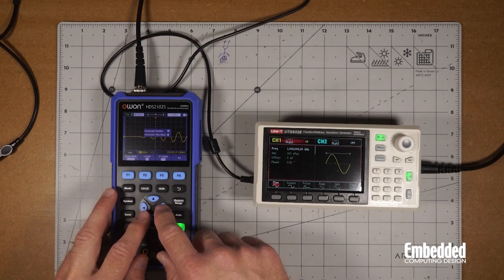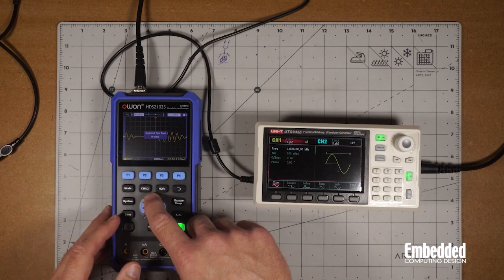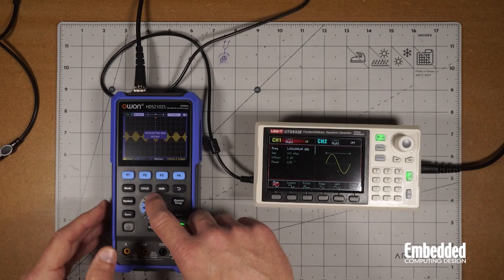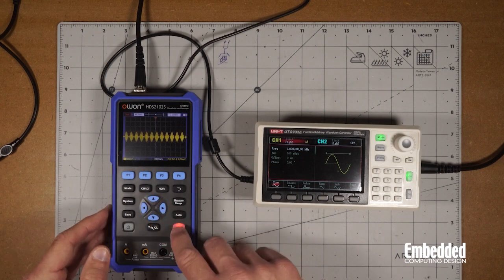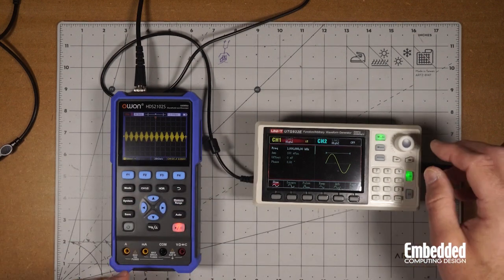Zooming in on the horizontal time base, you can see the carrier, and zooming out you can see it modulated. You can see the signal modulating on top of the carrier signal. Pretty neat.